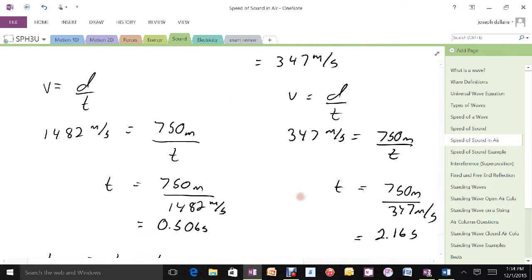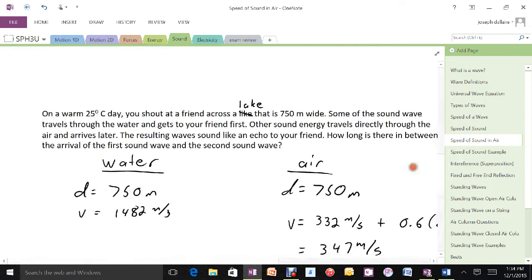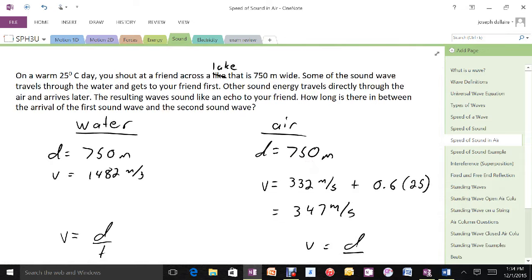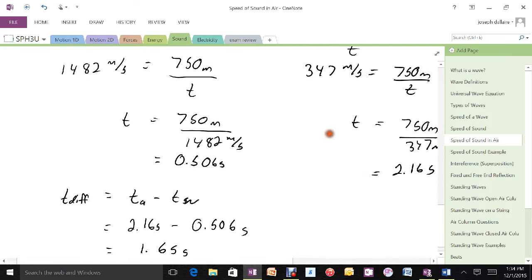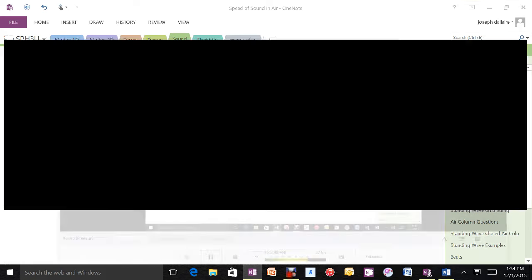So that is an illustration of how the different speed of sounds can lead to an echoing effect when there isn't actually a reflection of the sound wave. Thank you.